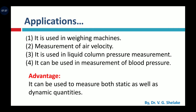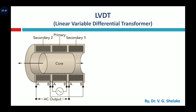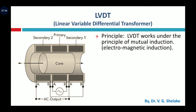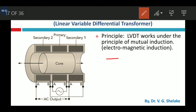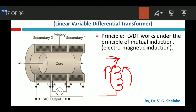The next transducer — also known as a displacement transducer but with a different working principle — is the Linear Variable Differential Transducer, called LVDT. It is based on mutual inductance. When current flows through one inductor, it induces an EMF around itself. When a second coil is placed near it, current also flows through that second coil. This is called mutual inductance — the two coils are physically separated but magnetically linked. The first coil is called the primary coil.